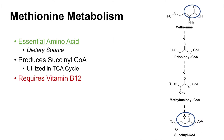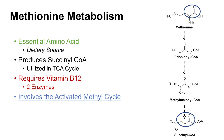The methionine metabolism pathway is unique in that it requires vitamin B12, and there are actually two enzymes in the methionine pathway that require vitamin B12 — we'll talk about those in the next slide. The methionine metabolism pathway also involves the activated methyl cycle, which has very important roles in many different processes.